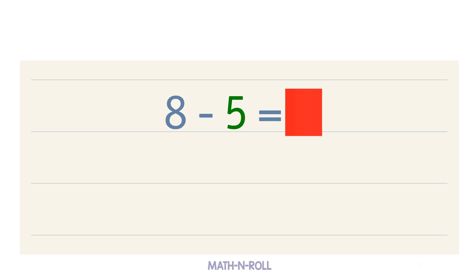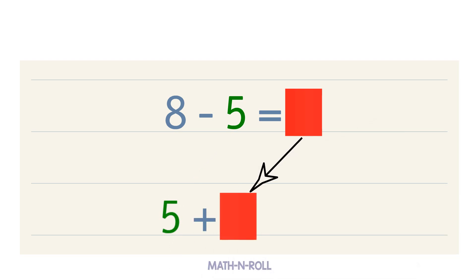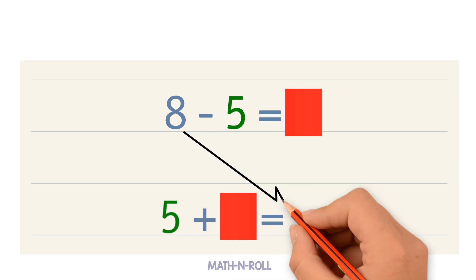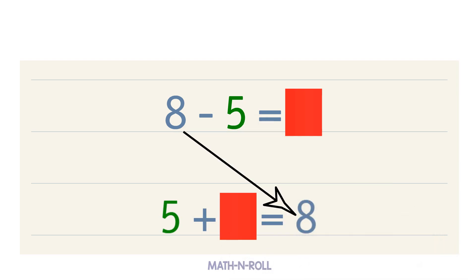8 minus 5 equals blank. We can use related facts to help us solve for the blank. We turn the subtraction fact into an addition fact using the same numbers. We had 8 minus 5 equals blank, and now we have 5 plus blank equals 8.